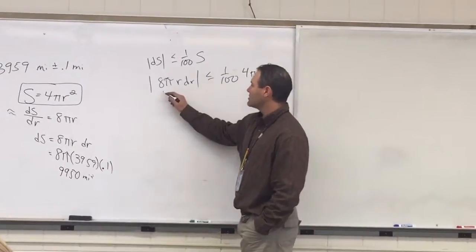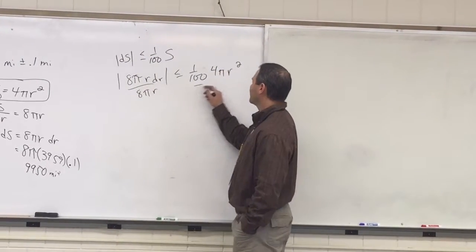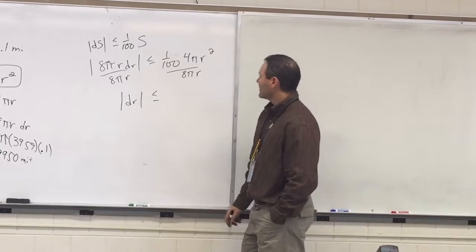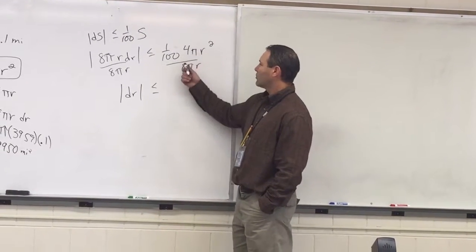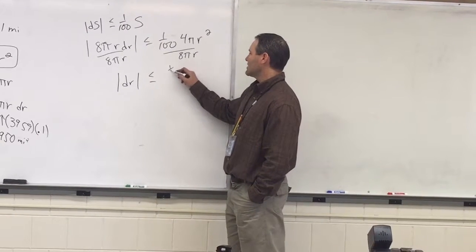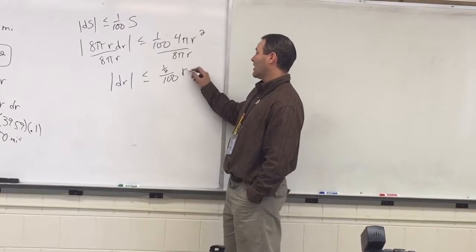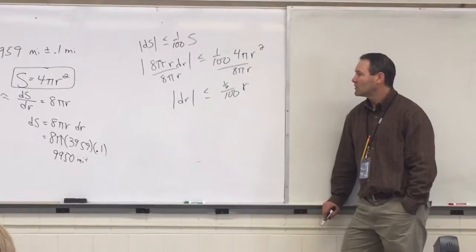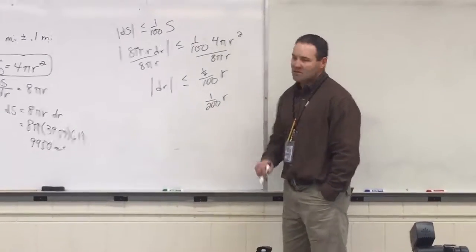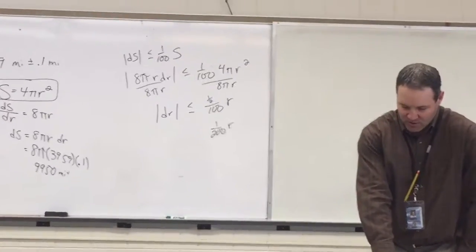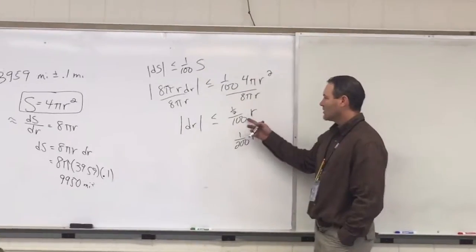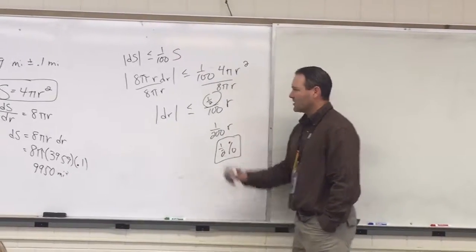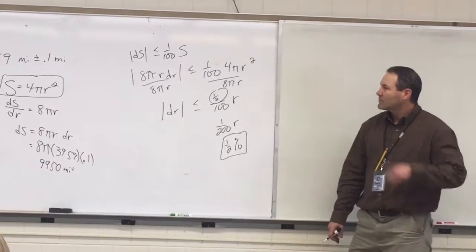So now we want to solve for dr. So I'm going to divide by 8 pi r. Divide by 8 pi r. So the pi's cross off and r cross off. 4 over 8 is 1 half. So you see that it's 1 half over 100 r? But what is the question? How accurately should we measure it? That's why we write it within... As a hundred on the bottom. So it has to be within 1 half percent. That will be your answer.